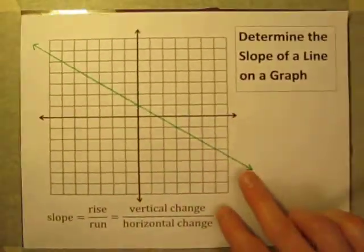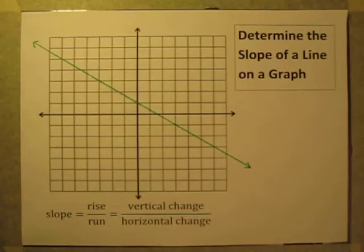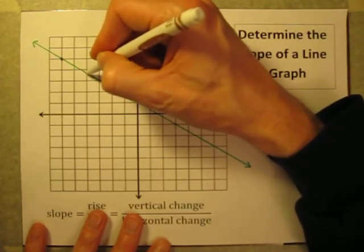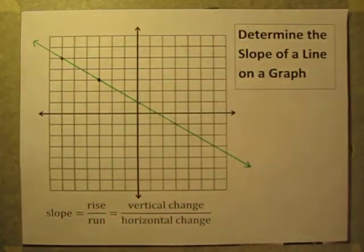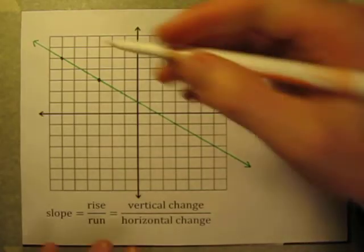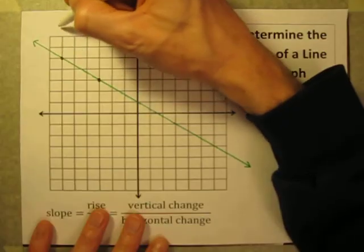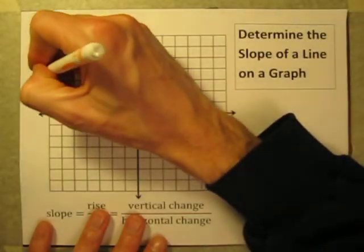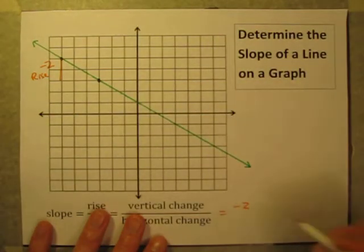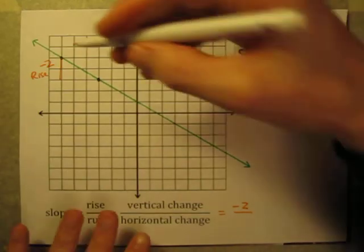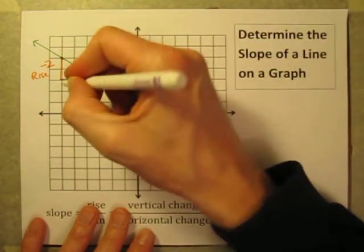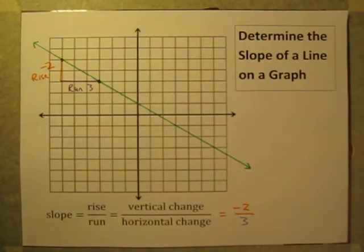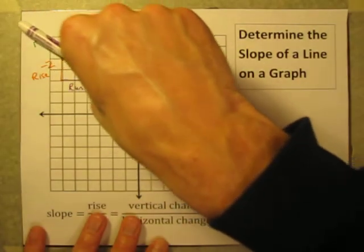Let's look at one more quick example with a little twist. First, let's pick some convenient points on the line. This time, going from left to right, instead of going up and to the right, I'm going down and to the right. Any time you're going down, that's going to be negative. So my rise is negative two. The run is three to the right. That gives us negative two over three, which is already reduced to lowest terms. That's the slope.